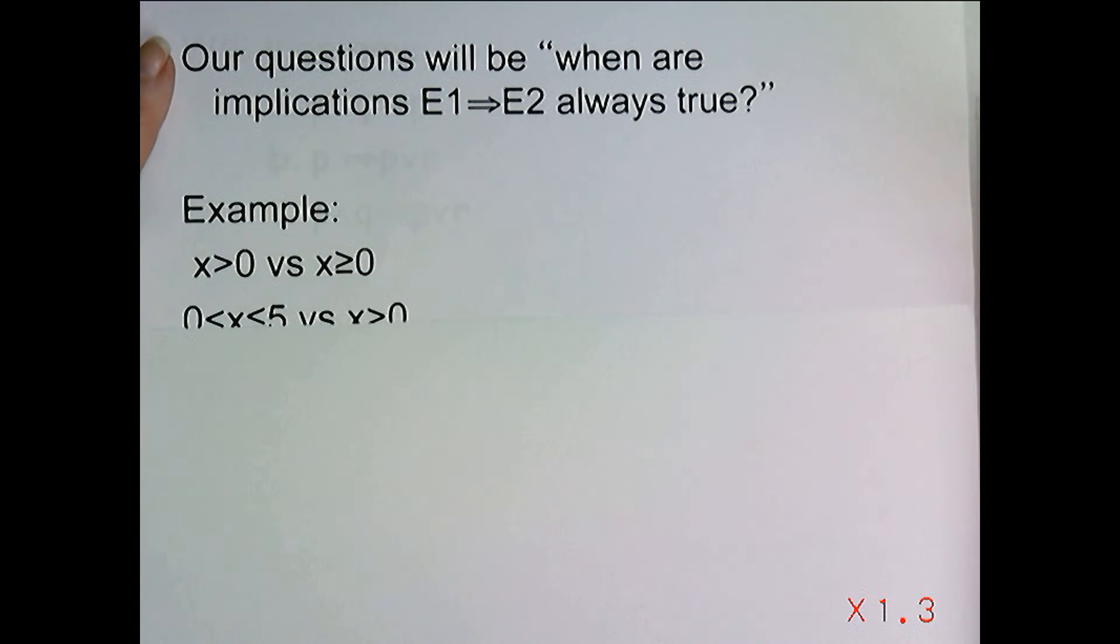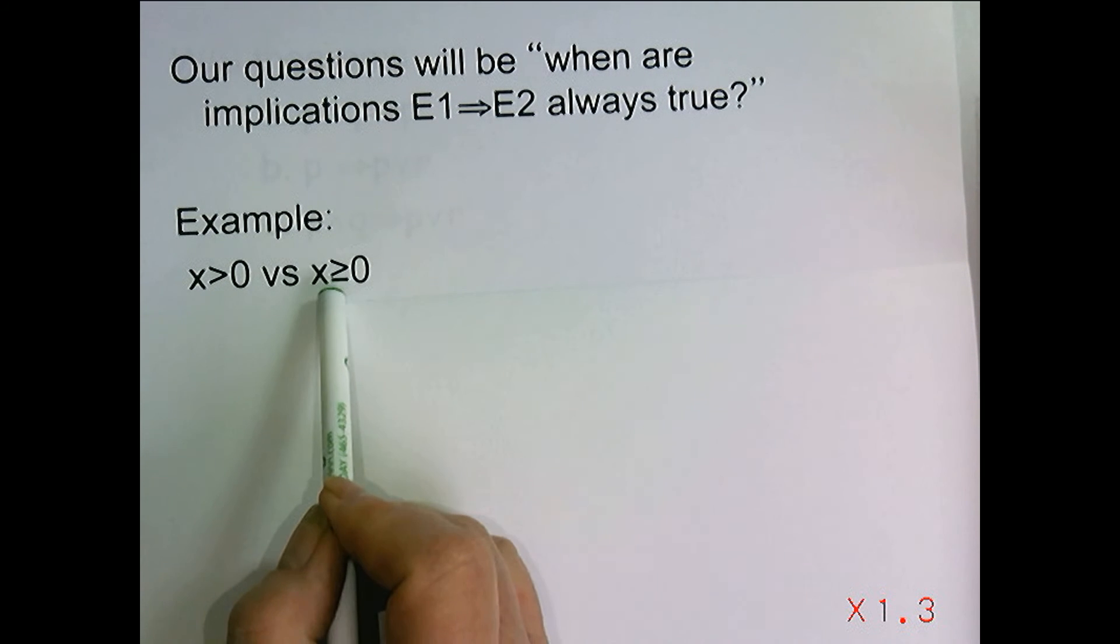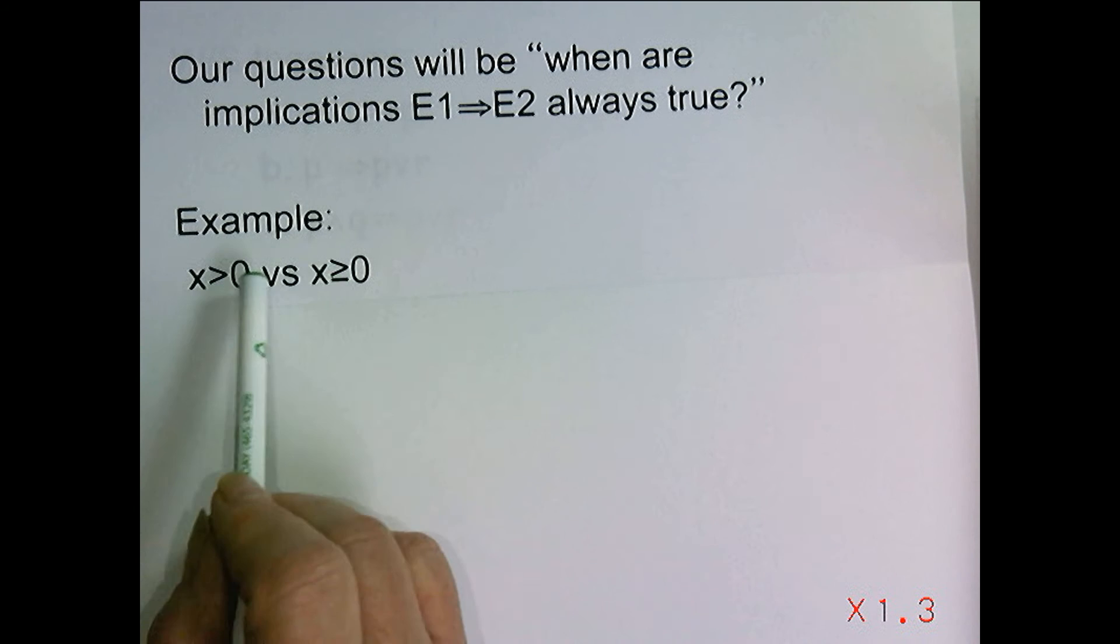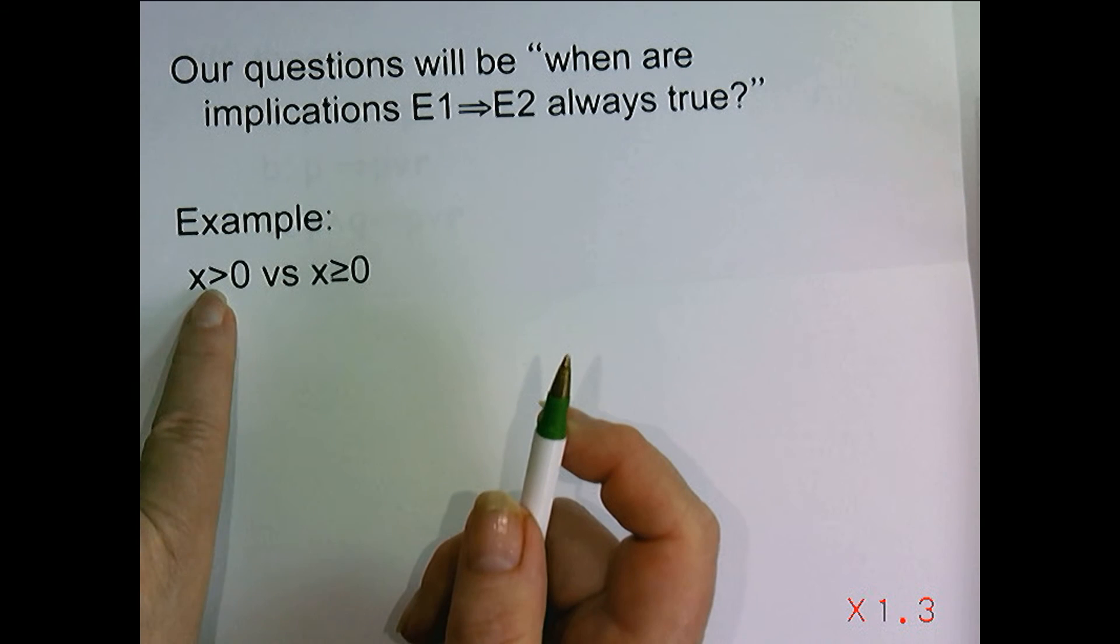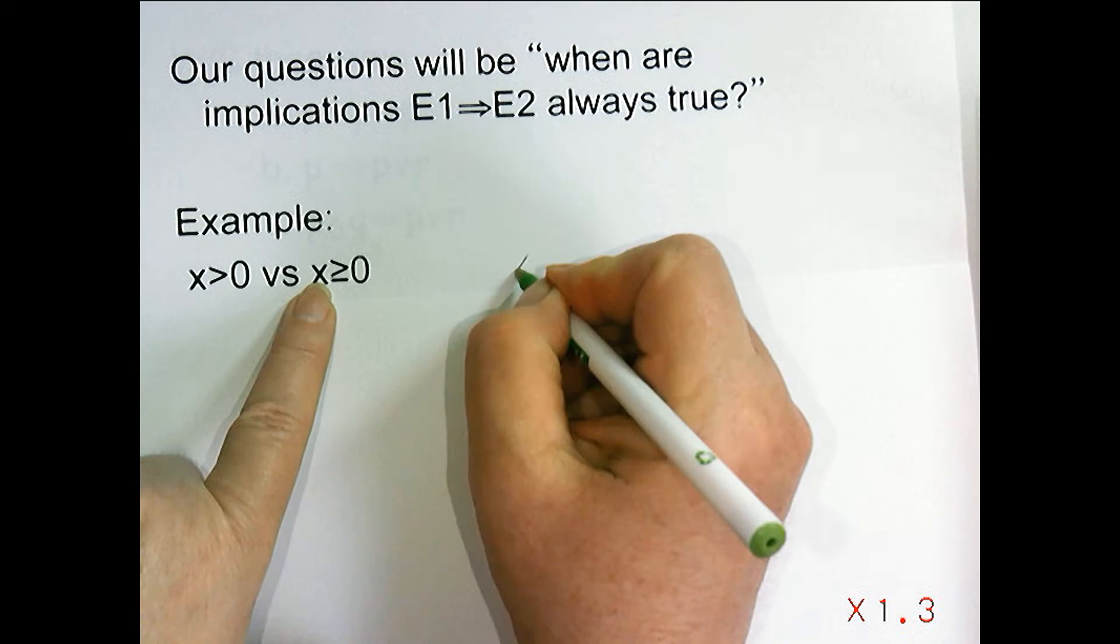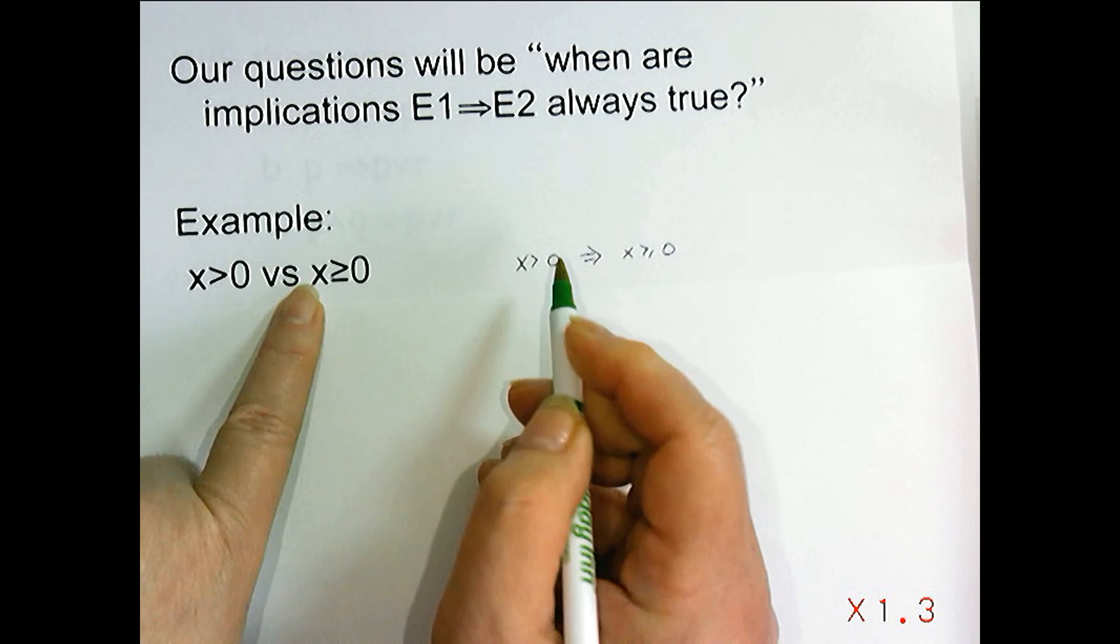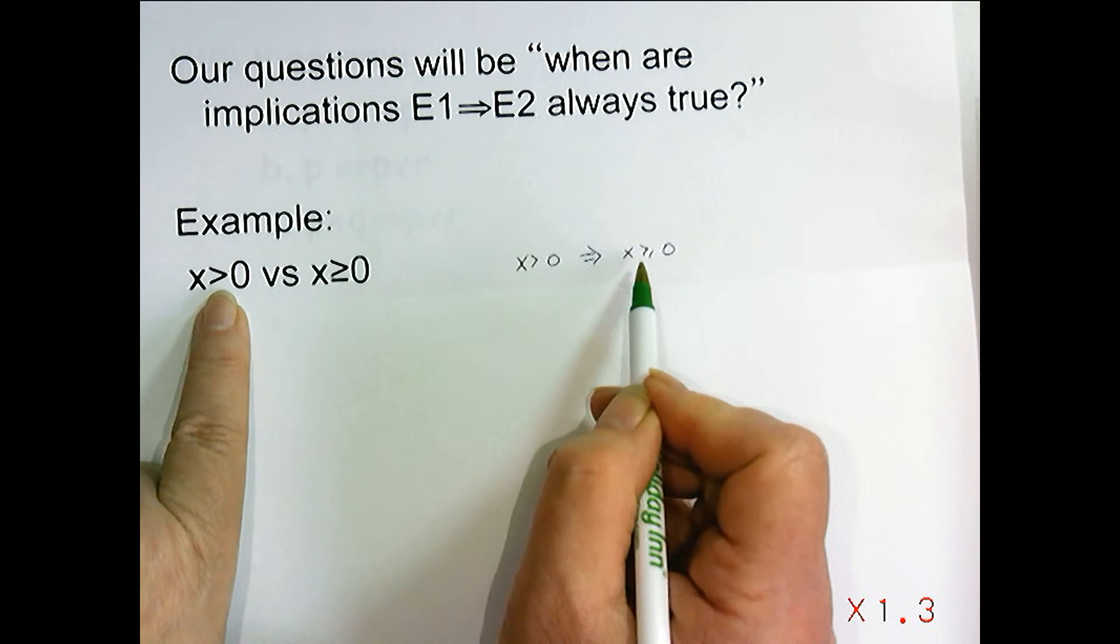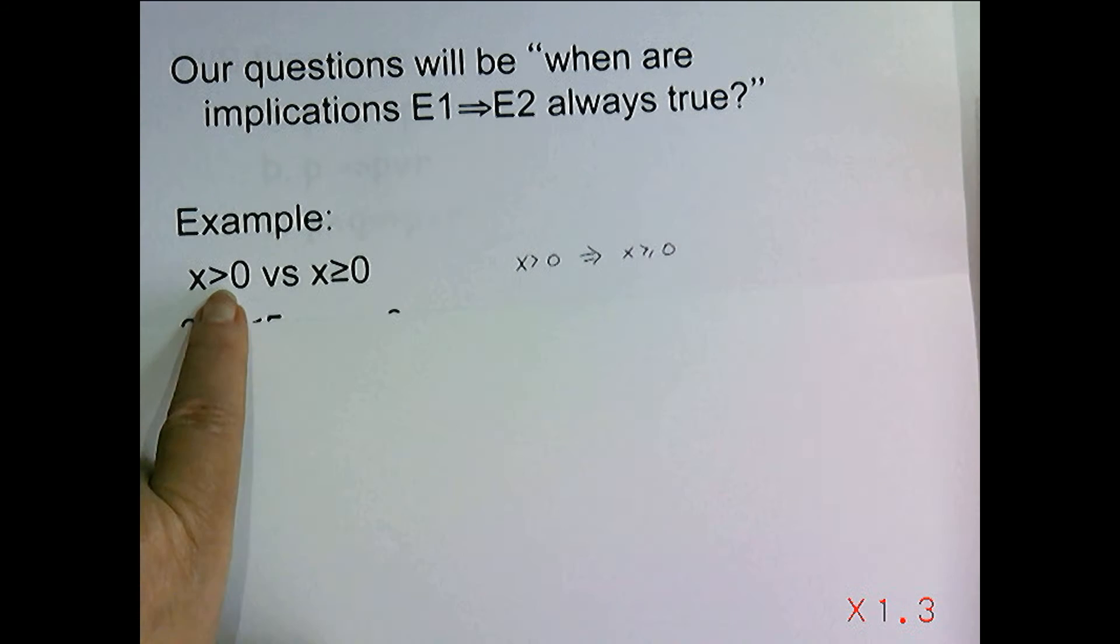For example, if we're comparing the two predicates x greater than 0 and x greater than or equal to 0, is one of these stronger or weaker than the other? Well, anytime we know that a variable takes on values that are greater than 0, those values are going to be greater than or equal to 0. And so x being greater than 0 implies x is greater than or equal to 0. So x greater than 0 is stronger than x greater than or equal to 0, or we could say x greater than or equal to 0 is weaker than x greater than 0.